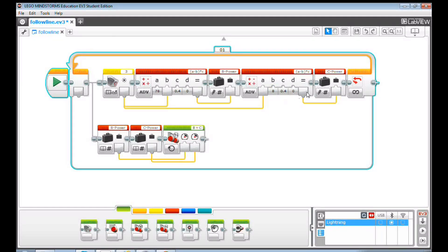How about we pass the negative power to the C motor instead of 0 so that the C motor can move backwards and helps make the turn.